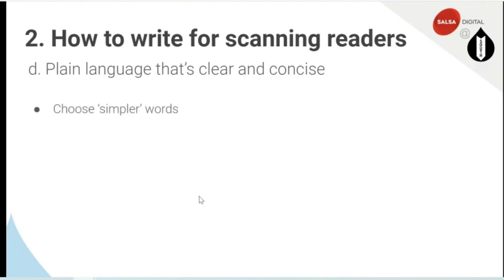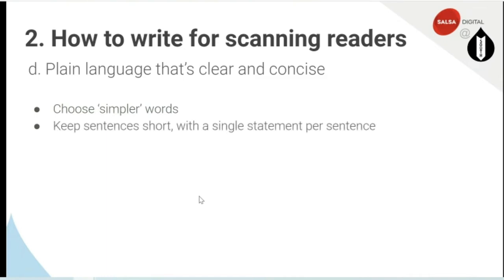So we should choose simpler words. Rather than using really long words — people sometimes think they have to use big words to show they have a good grasp of the language or to sound formal — in reality, shorter, simpler words are almost always better. In academic writing it's an exception, but certainly in online writing: simple. The Australian Government Style Manual has quite a good list. For example: use 'help' instead of 'assist' or 'aid'; 'among' instead of 'amongst'; 'about' instead of 'approximately'; 'later' instead of 'at a later date'; 'try' instead of 'endeavour'; 'since' instead of 'in light of the fact that.'